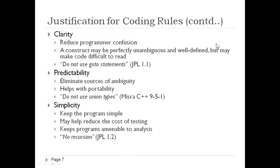The justification for coding rules includes clarity, predictability, and simplicity. Clarity reduces programmer confusion — even if a construct is well defined, it may be hard to read, so for example the rule says don't use goto statements. Predictability eliminates ambiguity and aids portability — do not use union types. Simplicity keeps programs easy to analyze and reduces testing costs.